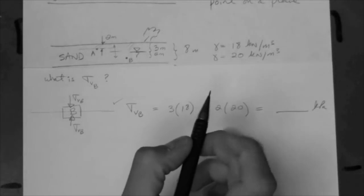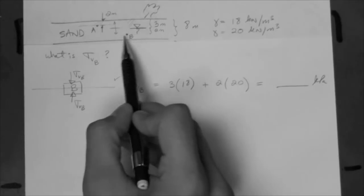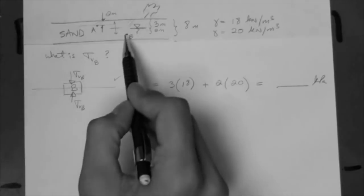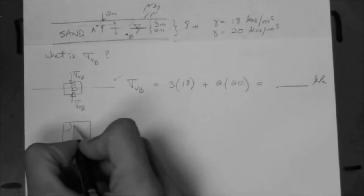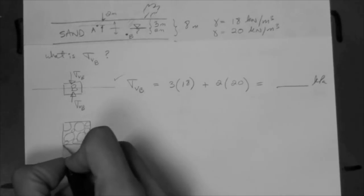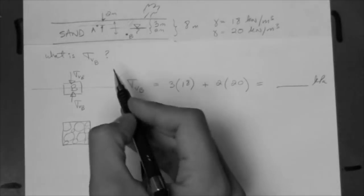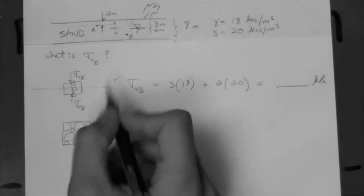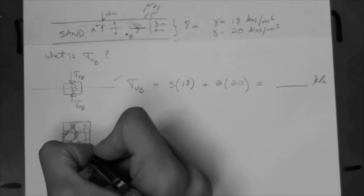But here we can ask two more things, and this is very, very important. The first one is that we have to realize that this point is below the water table. The water located at this point — remember, the point is a point in the soil, and the soil is made of particles. We have to go back to the fact that soil is made of particles, and there's space between the particles — the voids — and the voids in this case are full of water.